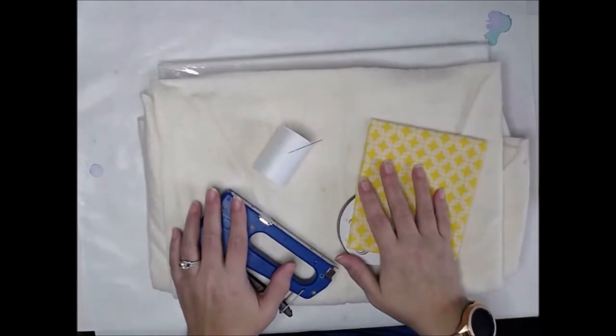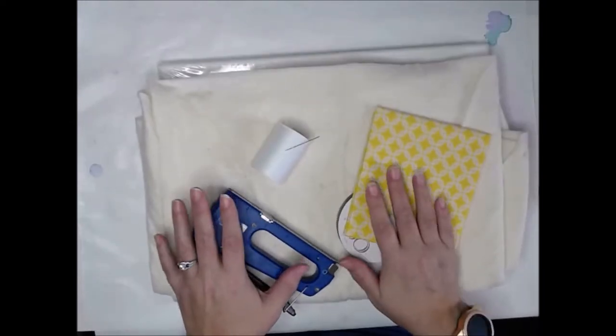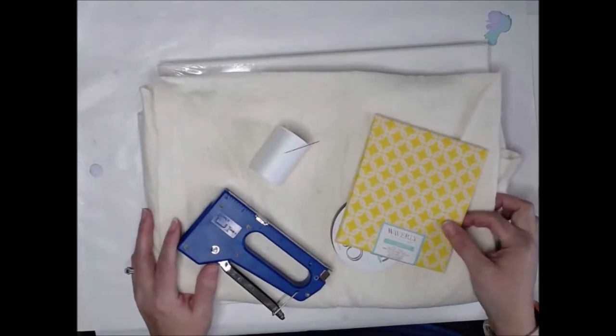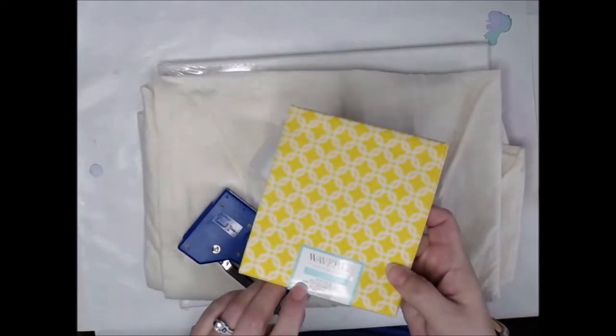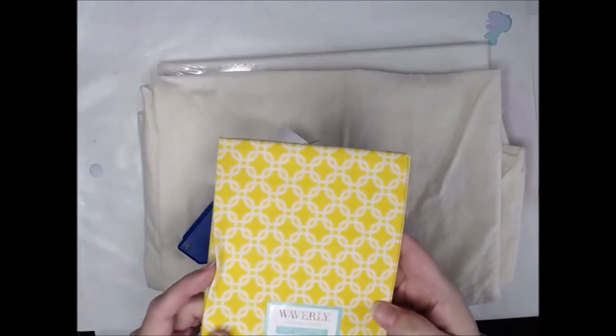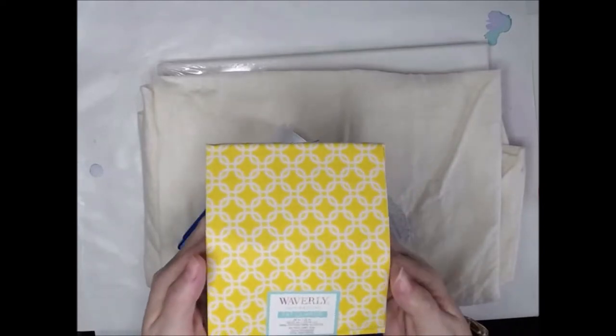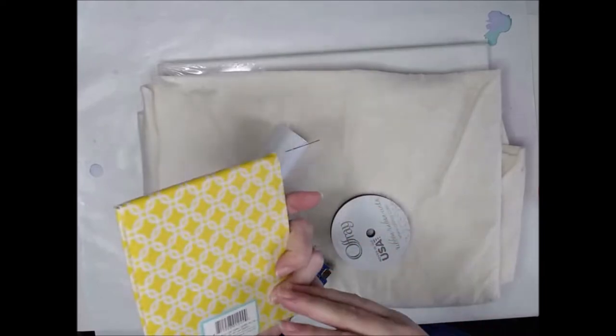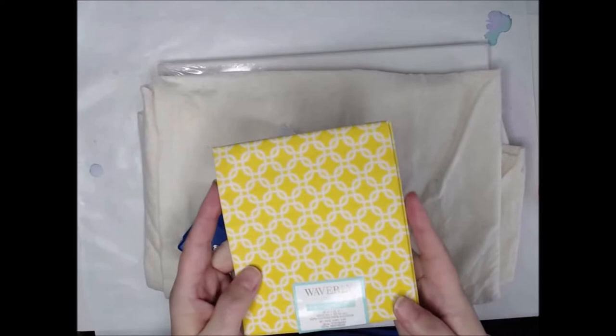We're going to be making what's called a French board, French memo board. There's a lot of different terms for it, but I decided that I was going to use some of this really cute Waverly material I found. I just picked this up at Walmart. It's just a fat quarter. It's all you need. It was only two or three bucks, not much to it.